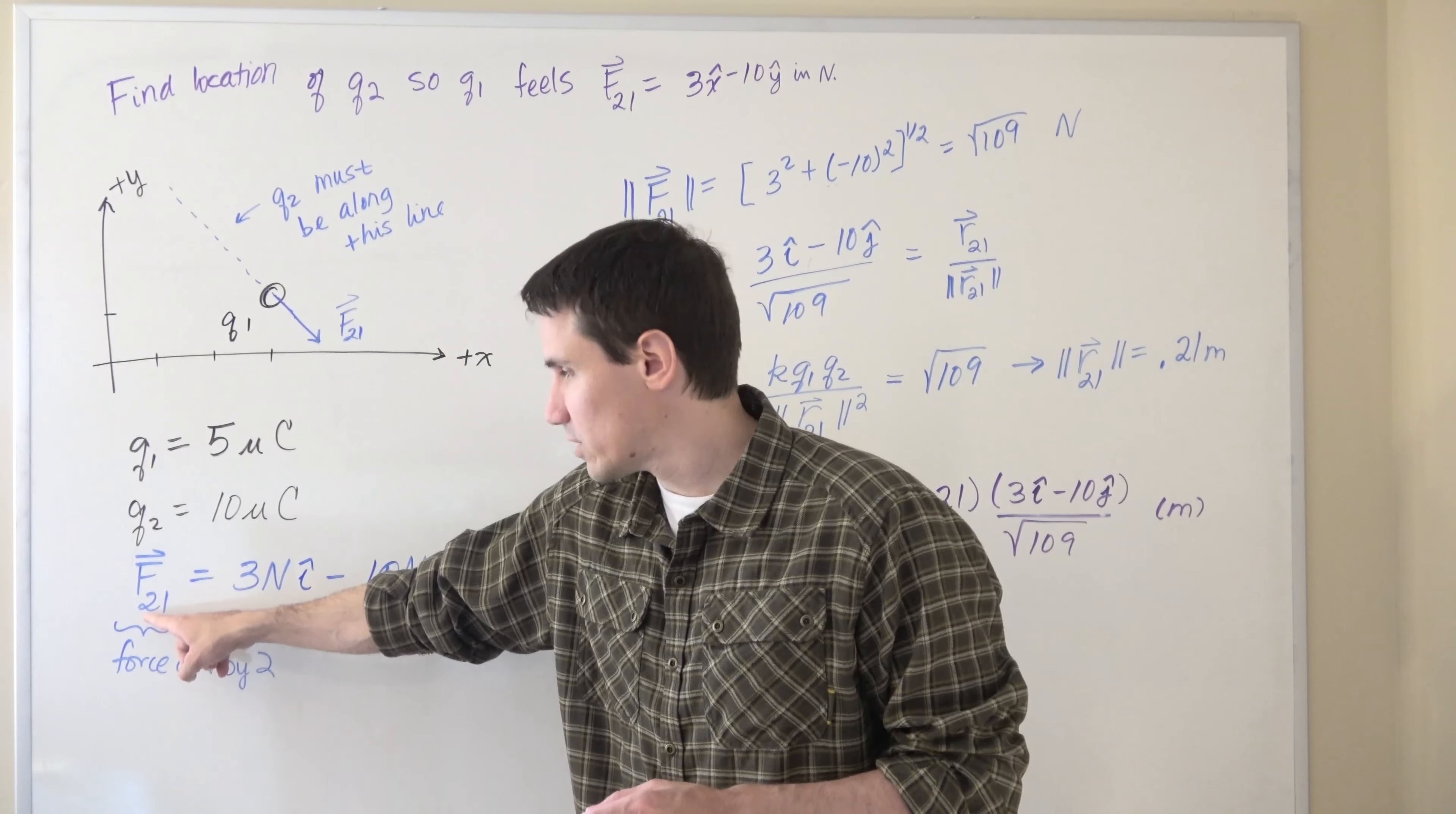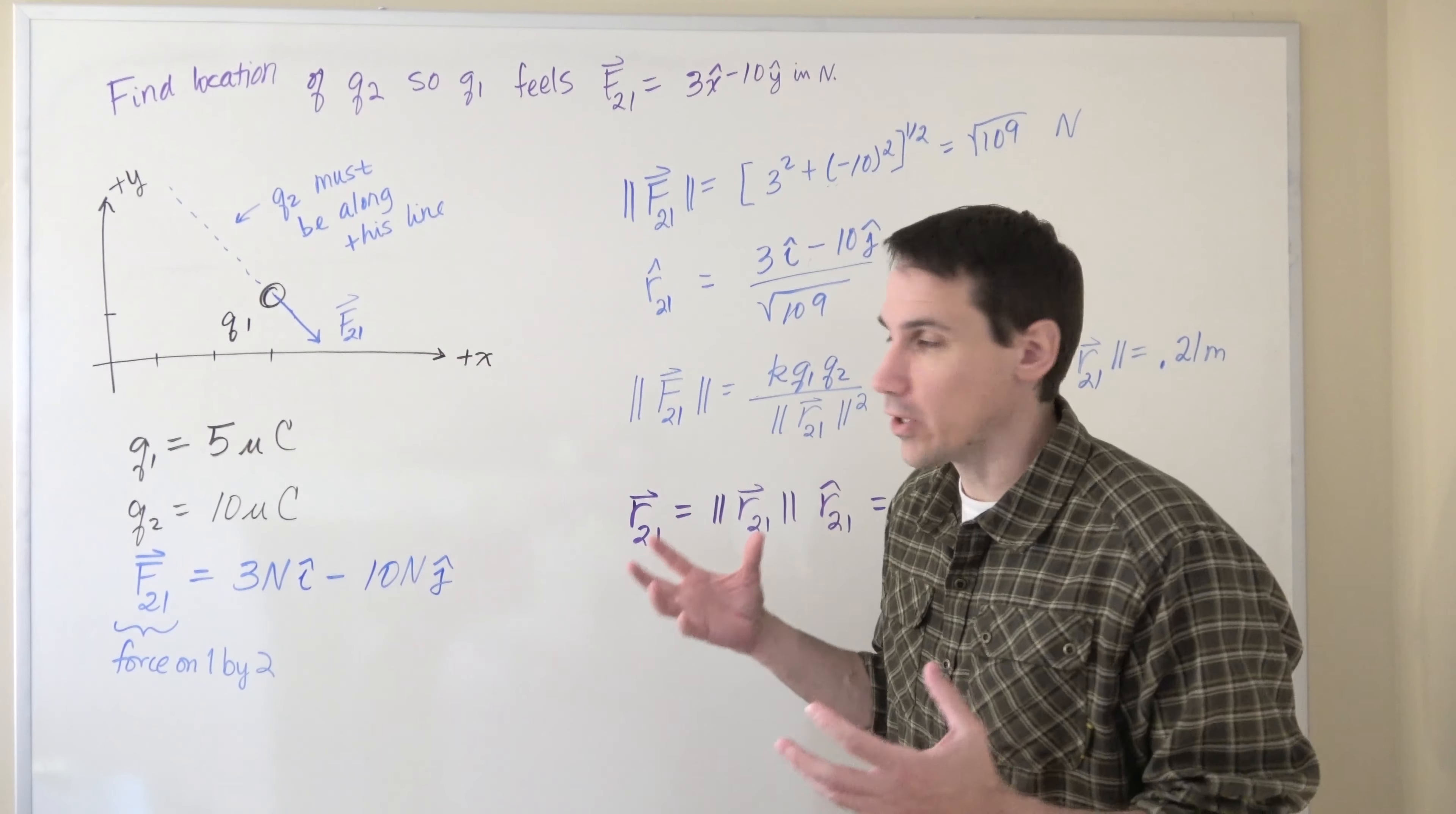And that force is given by 3 newtons i-hat minus 10 newtons j-hat and we write that as F21, which is the force due to particle 2 on particle 1. And the question that we're trying to answer is where should we put particle q2 in order to achieve this force?